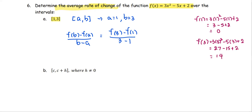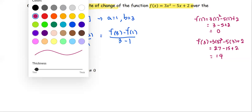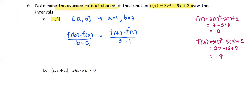Now we replace the function values within the formula. f(3) is 14 minus f(1) is 0, divided by 3 minus 1 which is 2. So the result turns out to be 7.